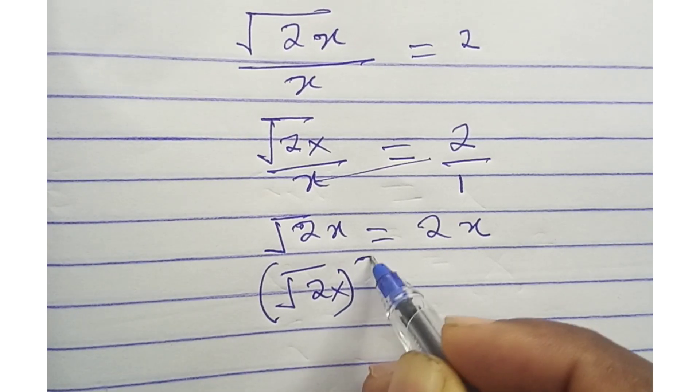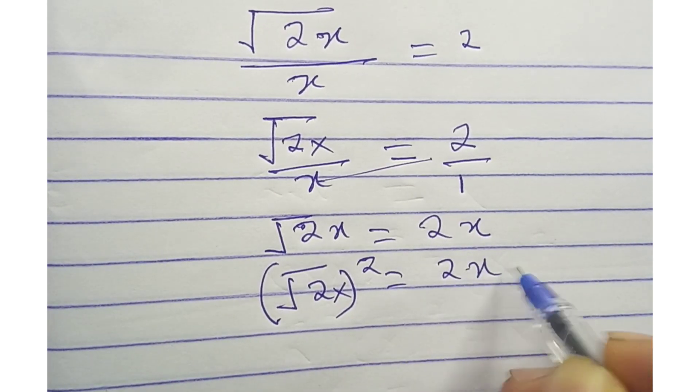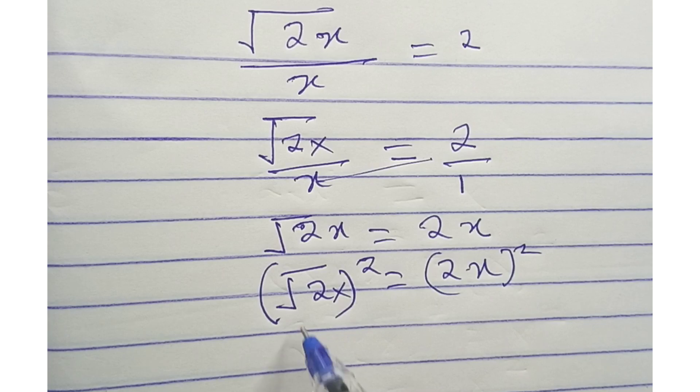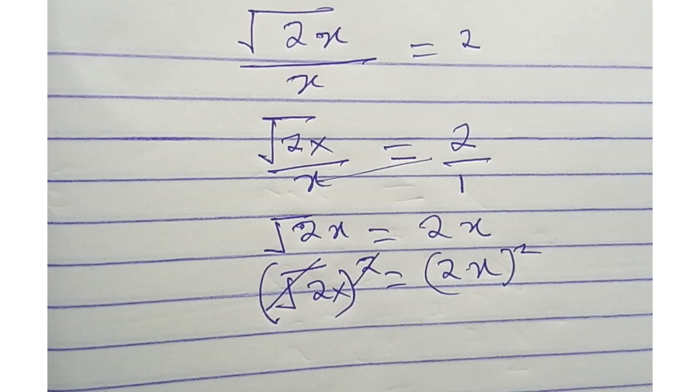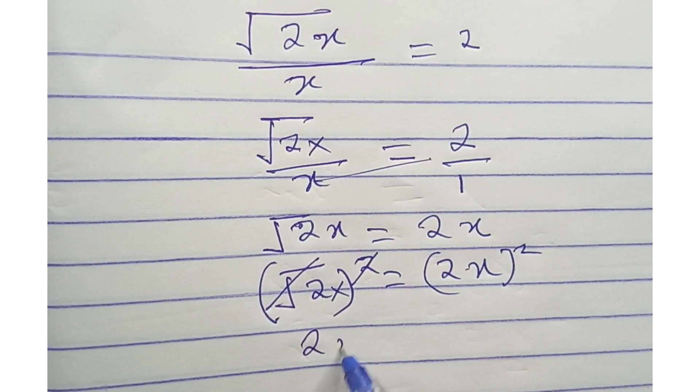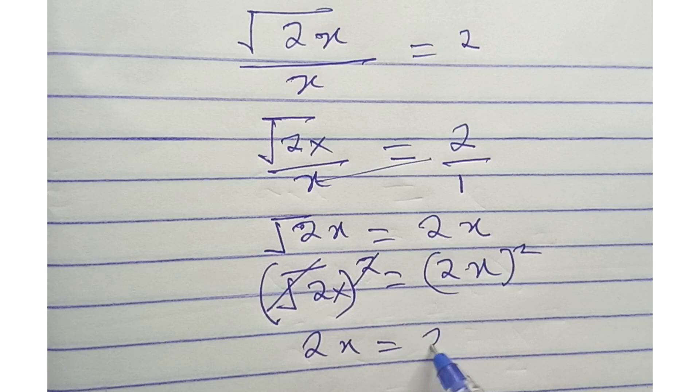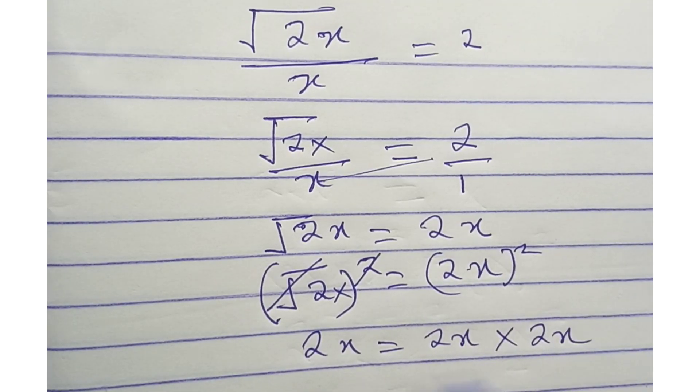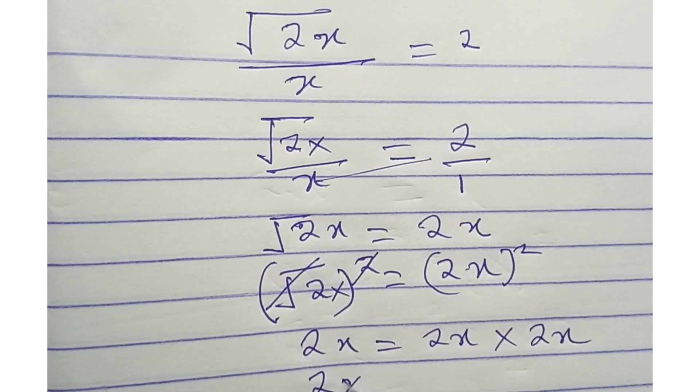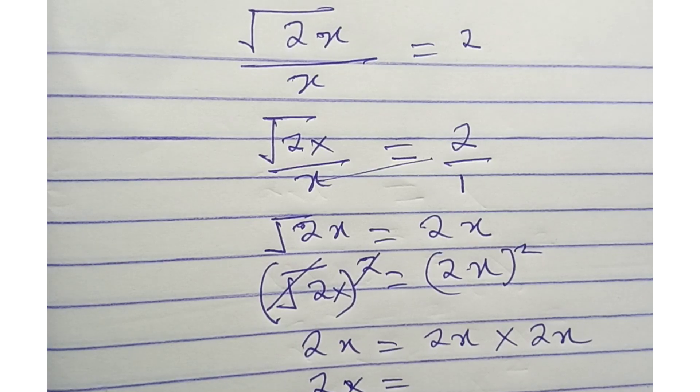This and this will go. What is remaining here is now 2x equals 2x times 2x. 2x will now be equals to 4x squared.